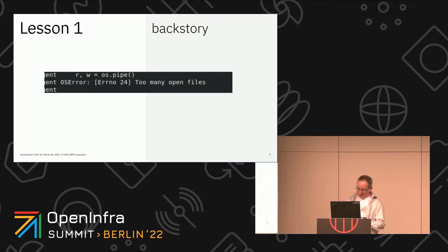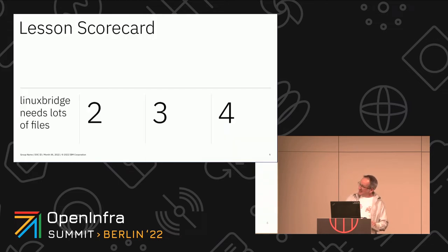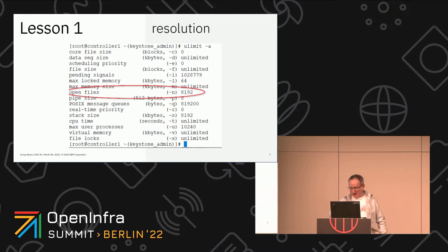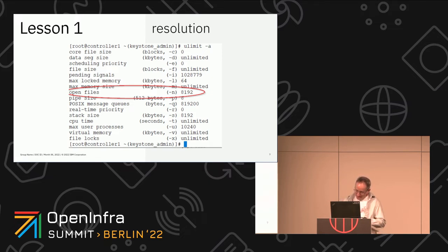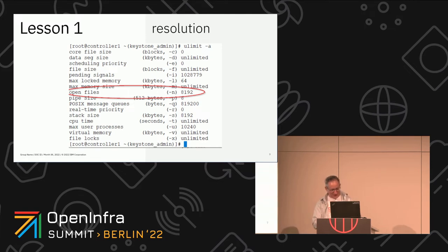So that was the promised audience participation. That was our first lesson: LinuxBridge needs more files. How do we resolve that? We increase the ULimit open files allowed for a particular user and/or computer. That was a quick lesson to get started, and you can see how these go. This problem only showed itself on our x86 machines, and that is my segue into the next lesson.